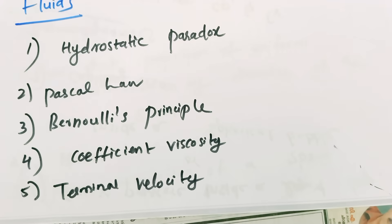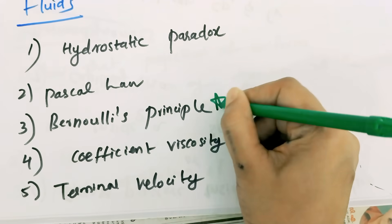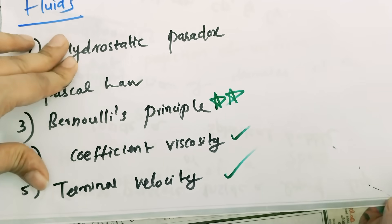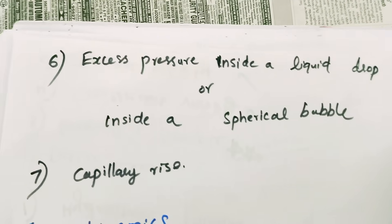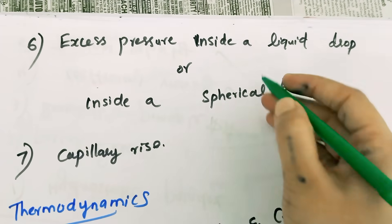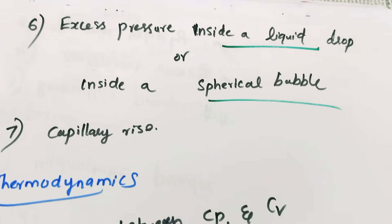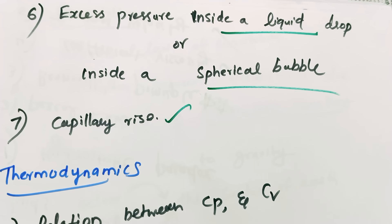We will learn about fluids — heavy weightage. What is the hydrostatic paradox? What is the derivation of Pascal's law? What is the derivation of Bernoulli's Principle statement? This is the derivation of Bernoulli's Principle. The derivation of the coefficient of viscosity, derivation of terminal velocity, excess pressure inside a liquid drop, excess pressure inside a spherical bubble, and derivation of capillary rise.